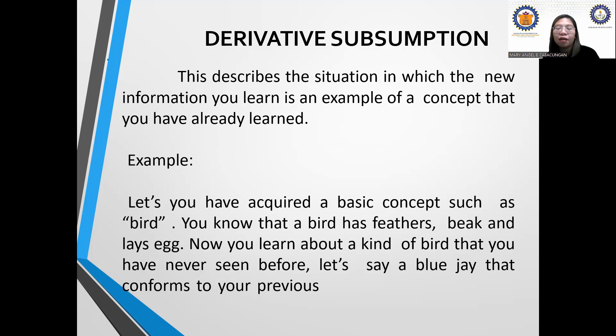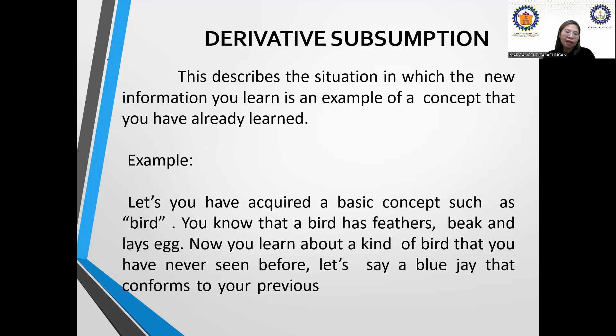It's more about how you connect new information to your previous or prior knowledge. It has similarities to Piaget — as a child grows, higher-order thinking expands and understanding broadens. An example of derivative subsumption: suppose you have already acquired the basic concept of a bird — the animal that flies.